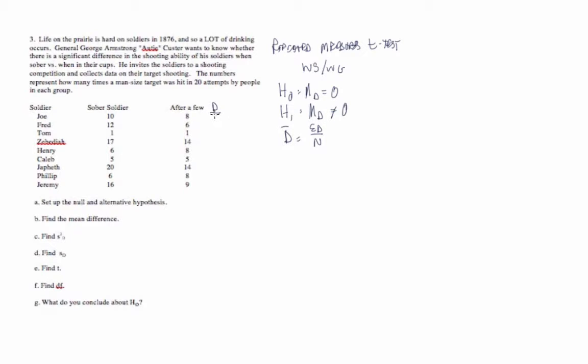So for our first soldier, Joe, the difference score is 2. 10 minus 8 is 2, 12 minus 6 is 6, and then 0, 3, minus 2, 0, 6, minus 2, and 7. So if we sum our difference scores, we have to include the negative numbers. They sum to 20.